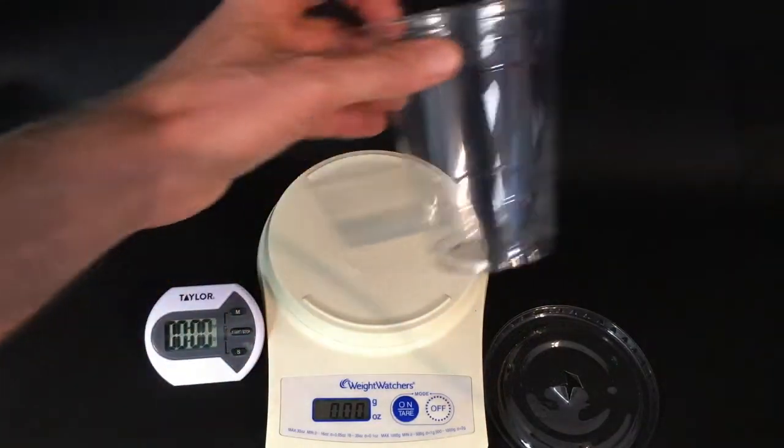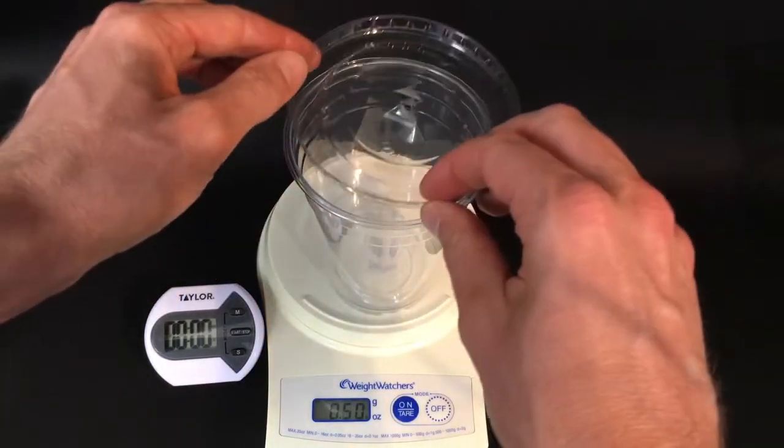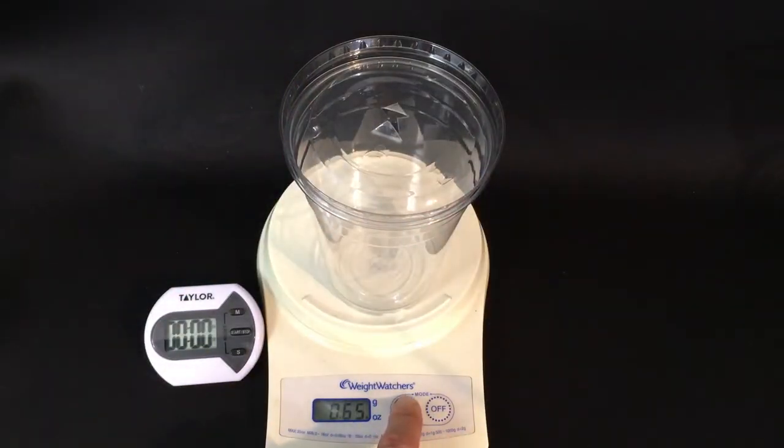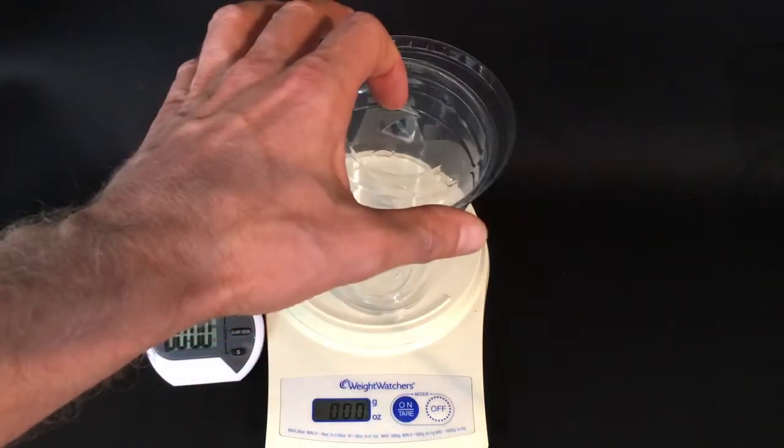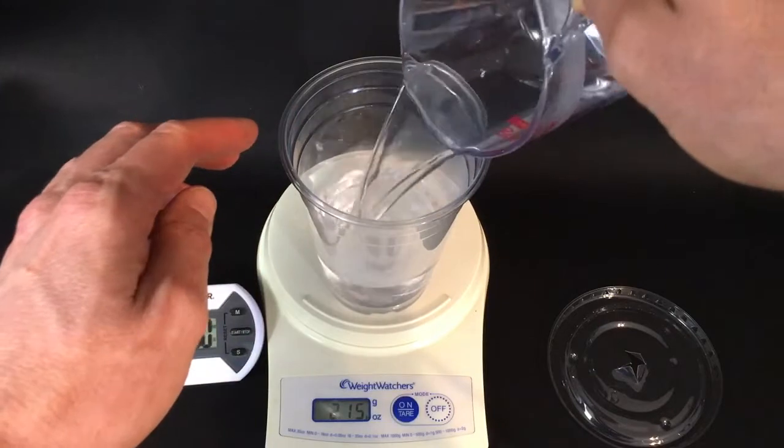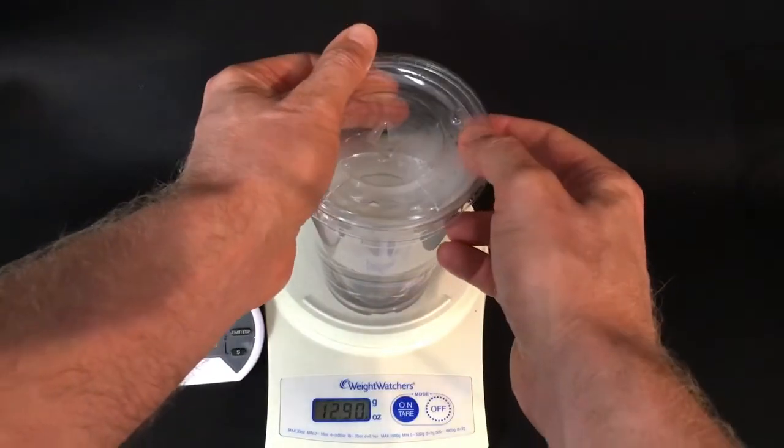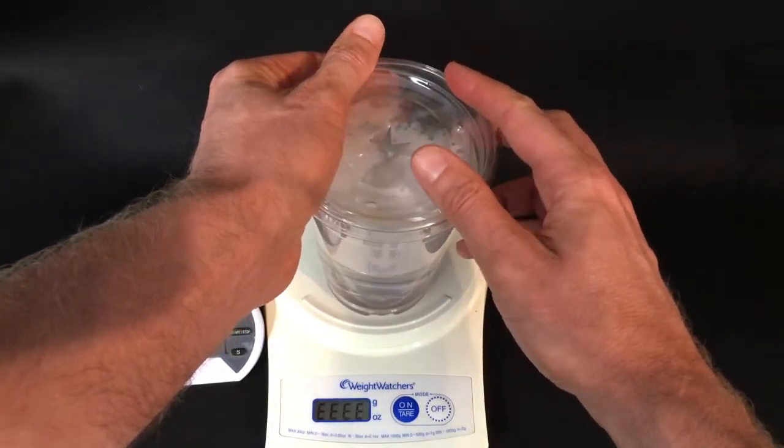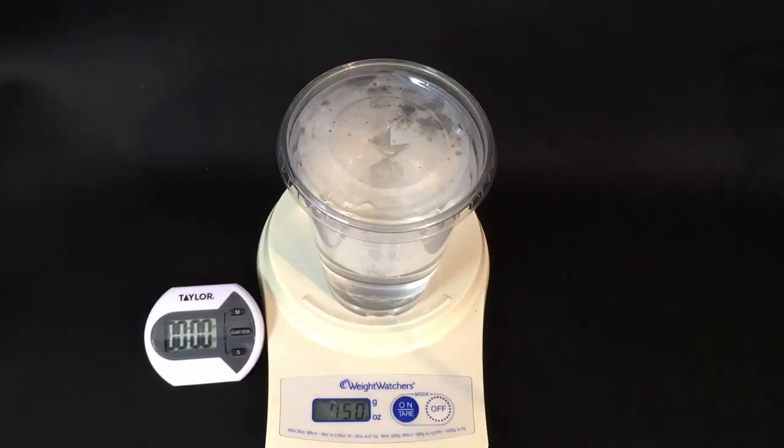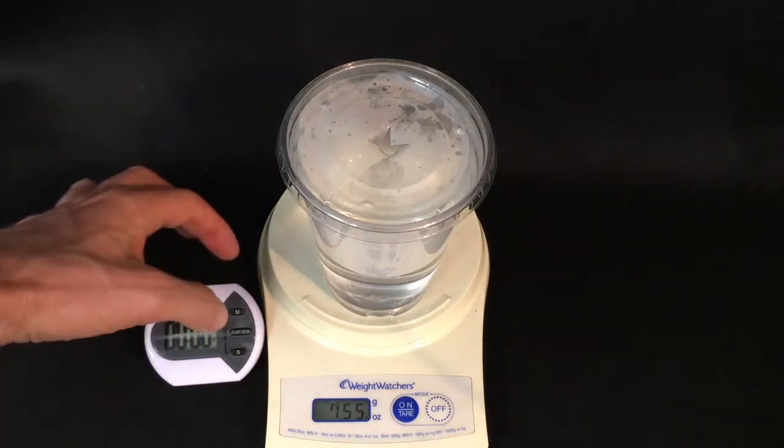Next we will experiment with a regular cup with a lid. We're going to tare the scale so we have 0.00. Take the lid off, pour the same temperature water in, same amount of water. We'll get our measurements. We're starting it now with the water at 7.55 ounces and we'll begin our time.